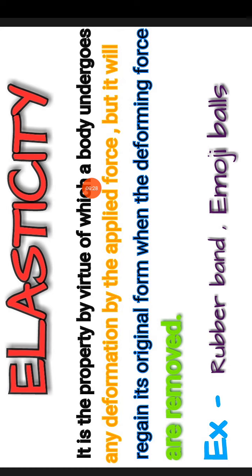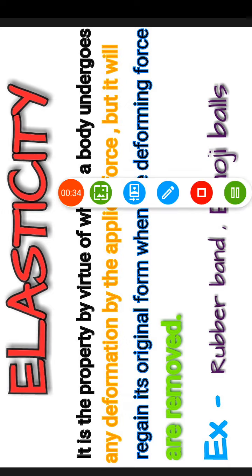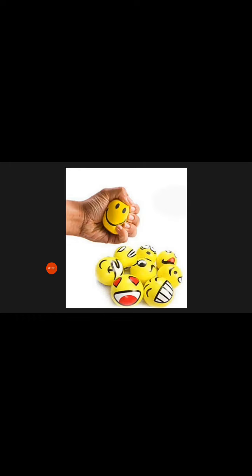Examples include rubber bands and emoji balls. Just like when we press or compress an emoji ball, it compresses and is deformed — its shape changes from a circle — and when we apply the forces and compress it, it becomes shapeless. But when the deforming forces are removed, it regains its original form, returning to its original shape, which is a circle. This is what elasticity means.